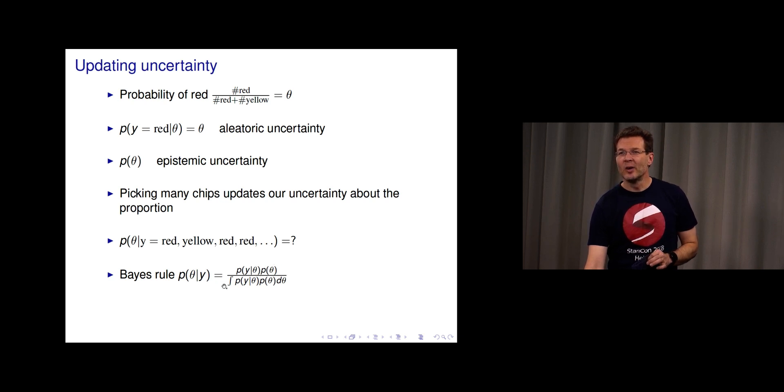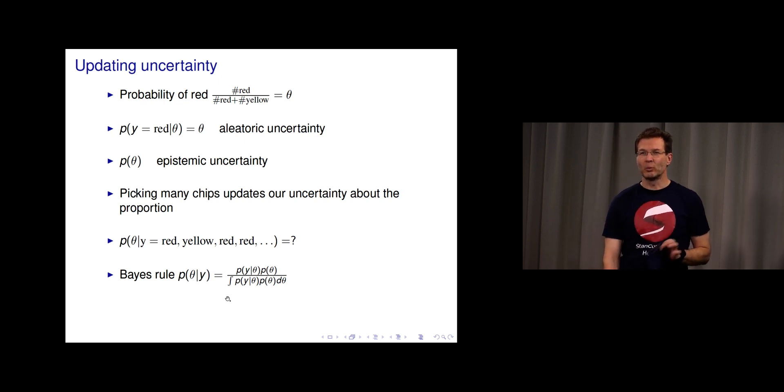Then we get out what we wanted to know: what is the uncertainty about the ratio given the observations. We'll come to many examples of this later.